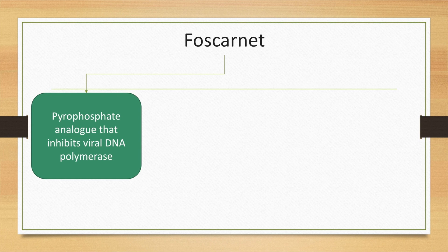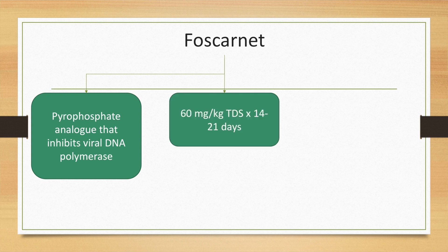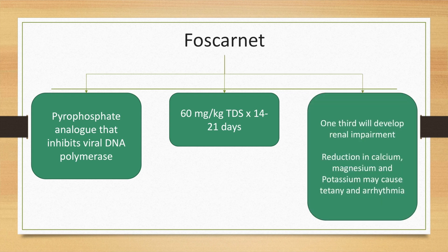Foscarnet is a pyrophosphate analog that inhibits viral DNA polymerase, given at a dose of 60 mg per kg three times a day for 14 to 21 days. Up to one third of patients will develop renal impairment, and reductions in calcium, magnesium, and potassium may cause tetany and arrhythmia.